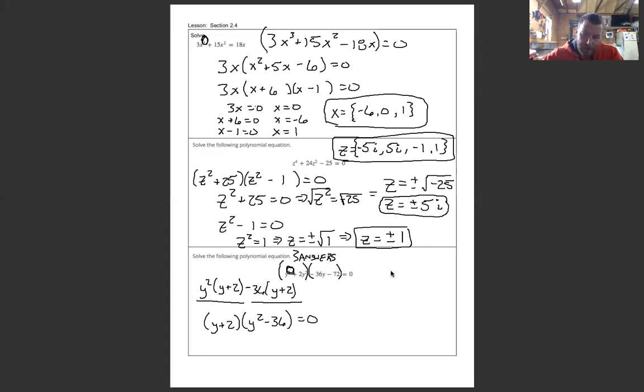And so I set the first one, y plus 2 equals 0. And I do get an answer of y is equal to negative 2. And then I'm going to do the second one. Y squared minus 36 is equal to 0. Again, now there's no y in the middle. So I'm going to use the square root method. So I'm going to add over 36. So y squared is equal to 36. Square root both sides. So y is equal to plus or minus whatever the square root of 36 is. And that's 6. So my answers are going to be y is equal to solution set of negative 6, negative 2, 6.